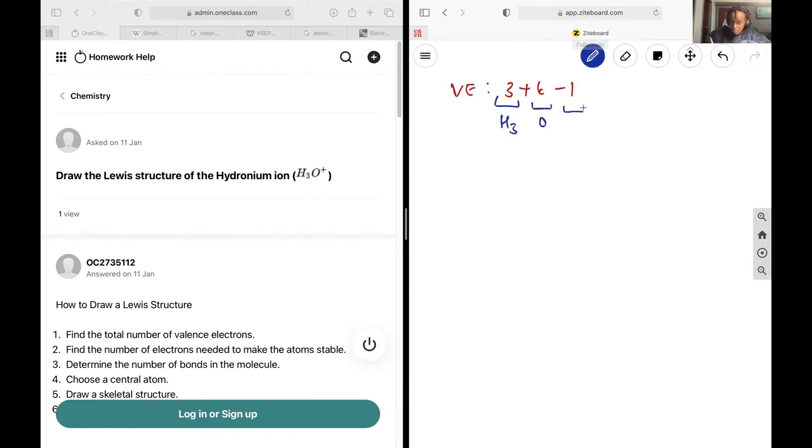This is H3O and then the positive charge. And so that is going to give me 8 electrons.